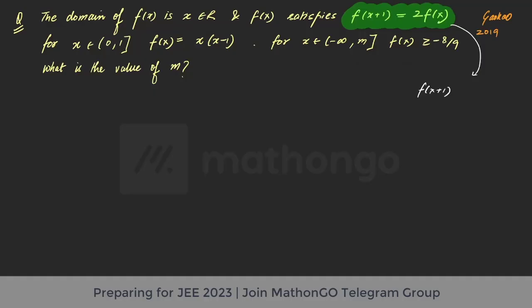f(x+1) = 2·f(x) has a very beautiful interpretation. If it were f(x+1) = f(x), the function would be periodic with period one. But here it is twice, so after every interval of one unit, the amplitude doubles — or going backward, it halves — for the same duration of one unit.